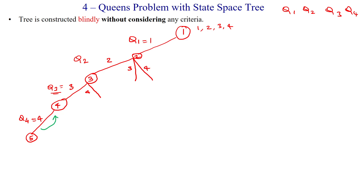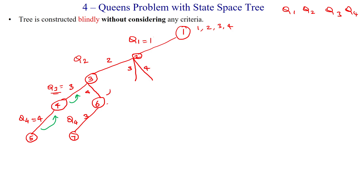Applying backtracking, we go back to node 3. There is another option for queen 3 — placing in the fourth column, leading to node 6. For queen 4, since columns 1, 2, and 4 are selected, we can select the third column, leading to node 7. That path is also complete, so we backtrack again. Node 3 has no more options, so we apply backtracking back to node 2.